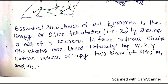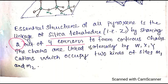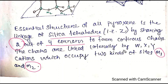What is the atomic structure of pyroxene? The silica tetrahedra share 2 of their oxygen atoms, forming chains. These chains are linked laterally by M1 and M2 cation sites, which connect the chains through W, X, and Y cations.